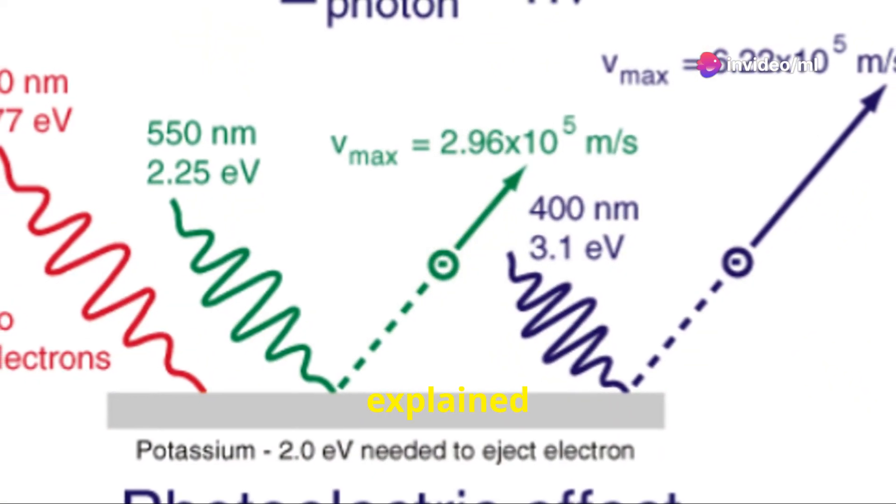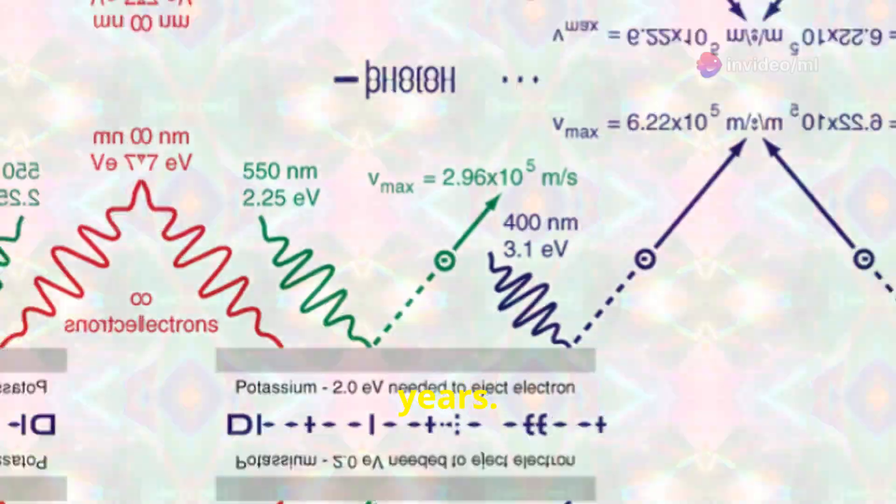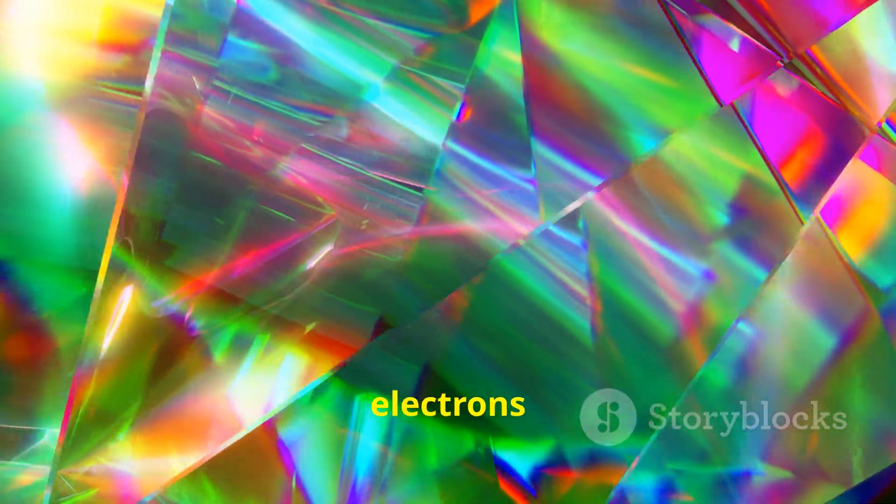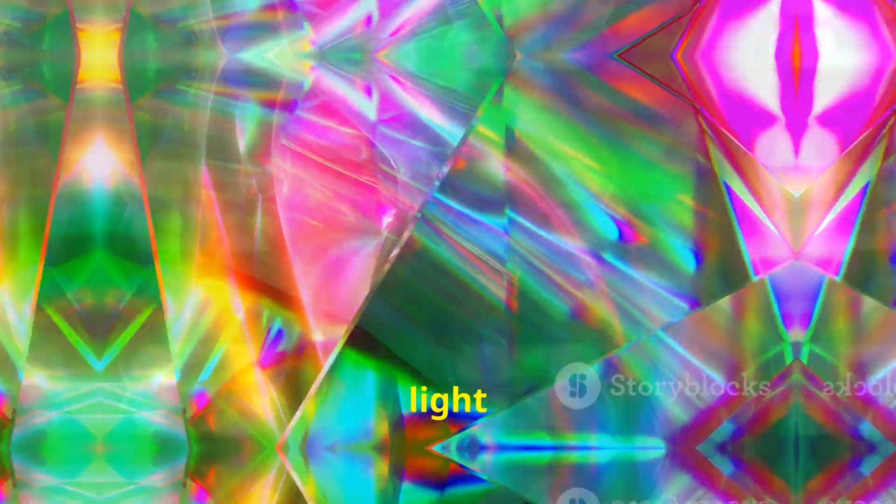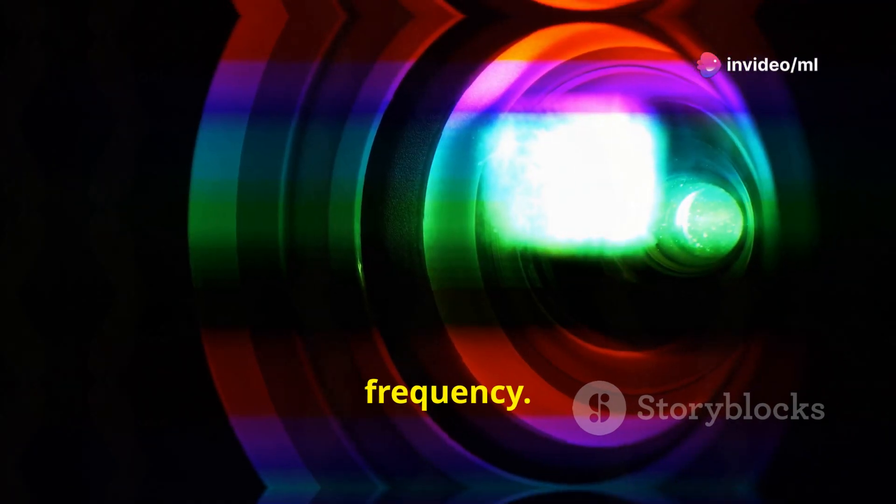Einstein's equation explained the puzzling observations that had baffled scientists for years. The energy of the emitted electrons depended on the frequency of light because each photon carried a specific amount of energy determined by its frequency.